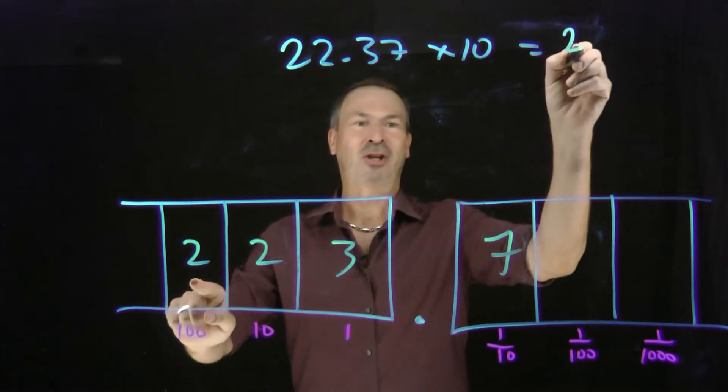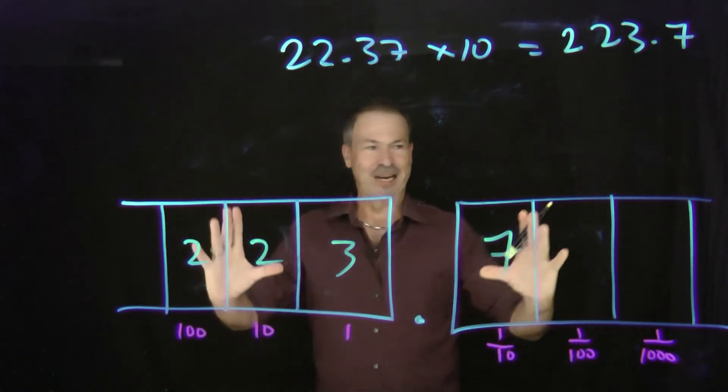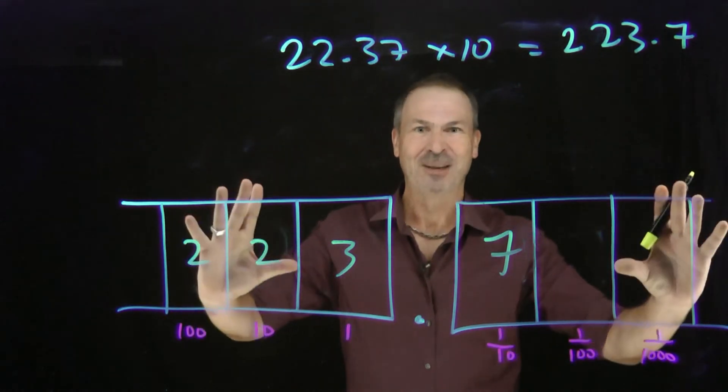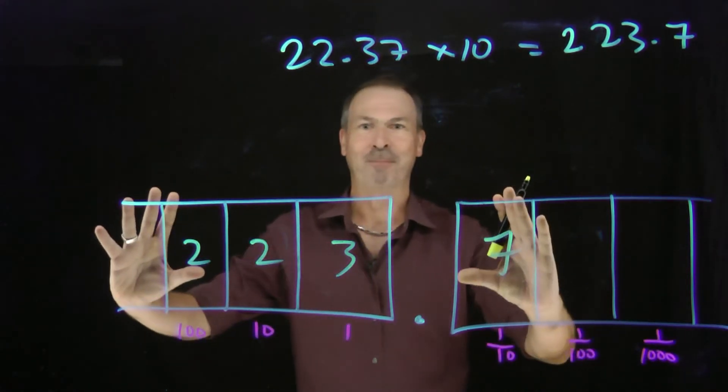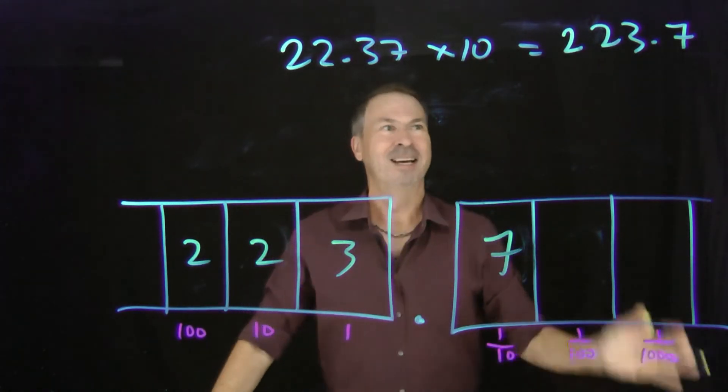So I can see now the answer is going to be 223.7. It looks like in effect, if I just think my way through it, visualize what's actually happening, I'm just taking all the digits and shifting them over one place. And explosions make good sense. That's good. That's right. There's the answer.